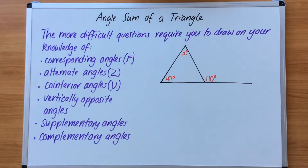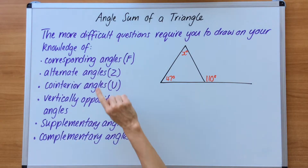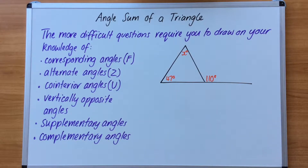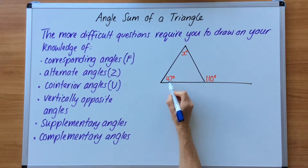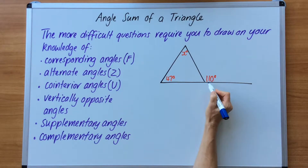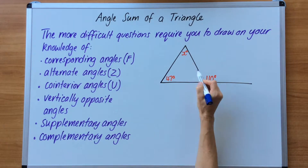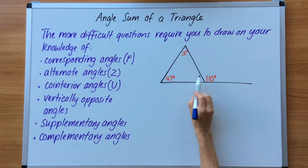Continuing with angle sum of a triangle, the more difficult questions require you to draw on your knowledge of these angles. You will need to draw on this in order to solve some of the missing angles in these triangles. Looking closely at this question, I can see I've got to find the value of x. I've been given 47 degrees, and there's an angle on the outside. I can't look at the triangle until I solve this section here, and this section is actually a supplementary angle.